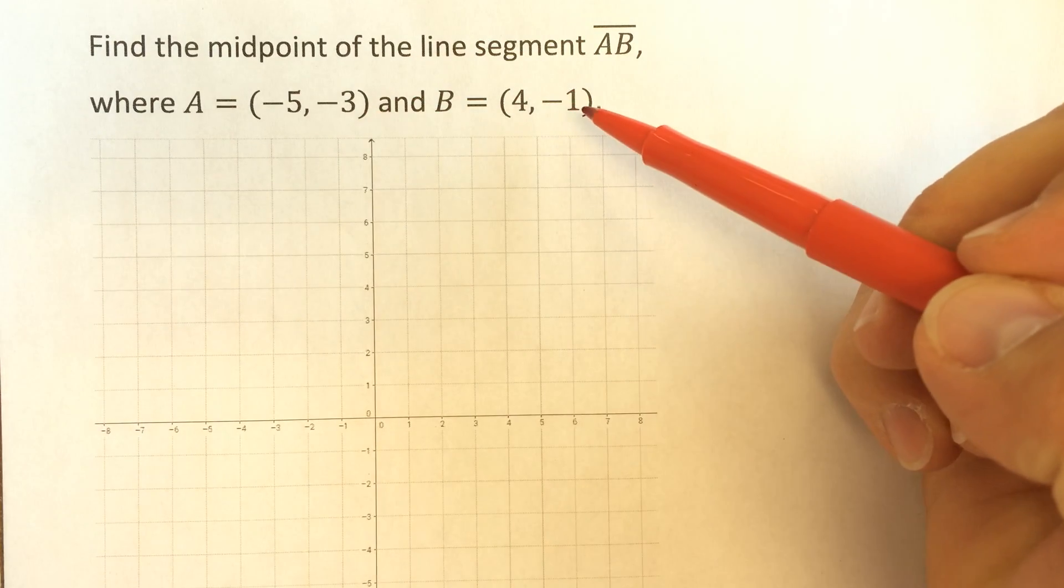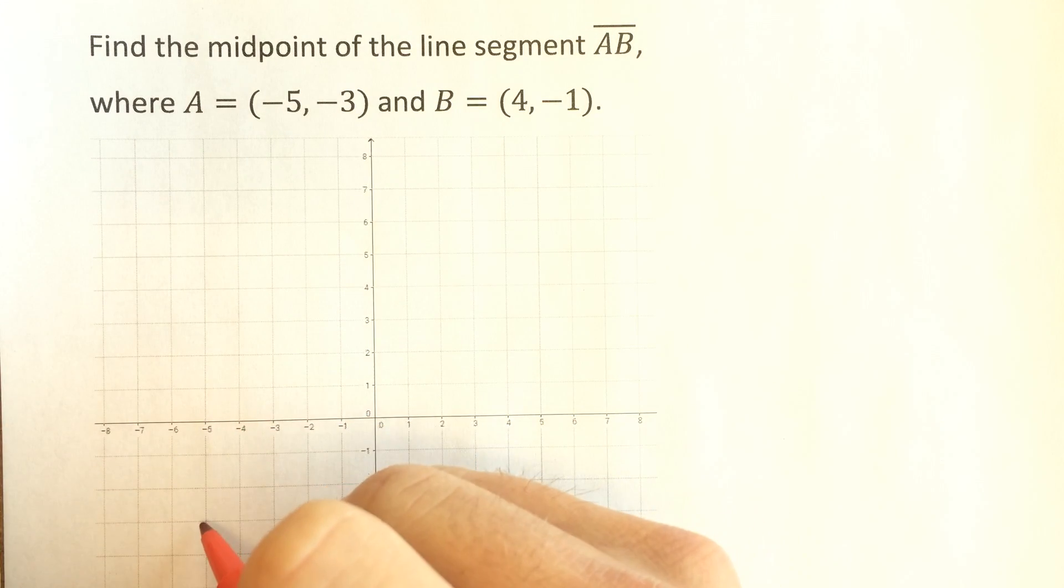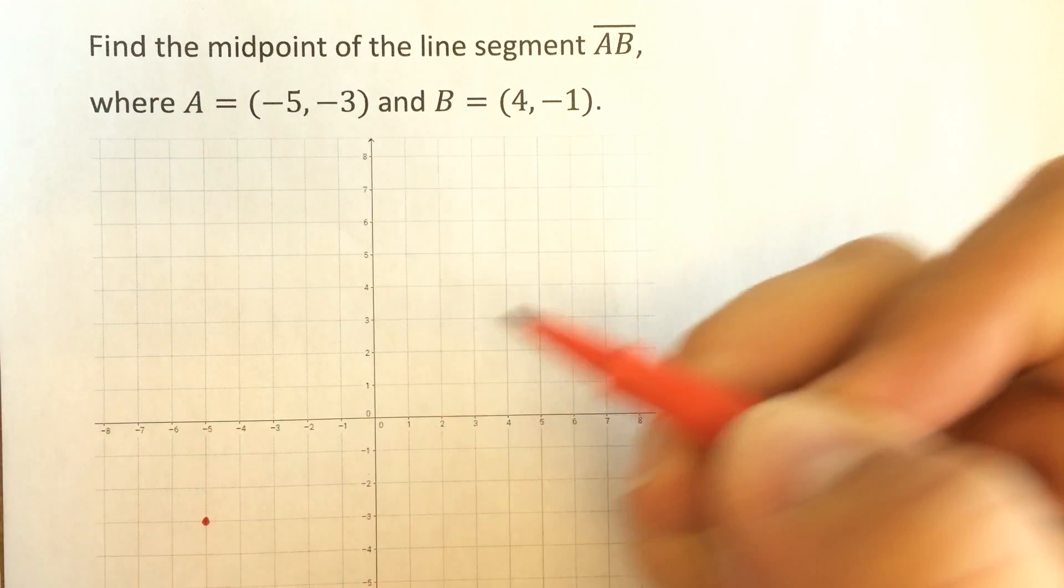A is this point here, negative 5, negative 3. And B is the point 4, negative 1. Let's plot those first. Negative 5, negative 3 is A.